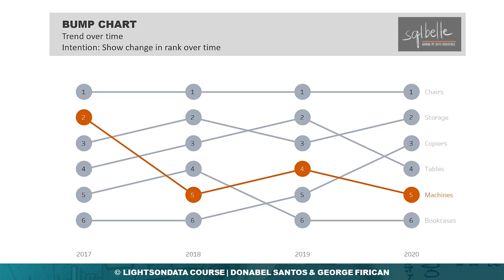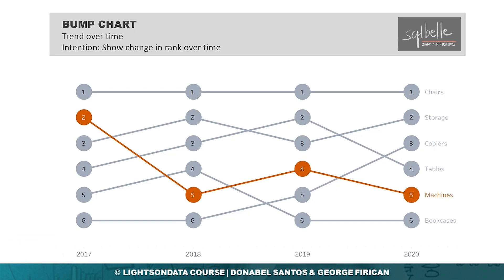A bump chart also shows trend over time, but what this chart shows easily is the change in ranking over time. Note that this chart does not highlight the magnitude of the difference between the ranks — we don't know if the difference is a dollar, ten dollars, a point, or a hundred points. If the magnitude of the changes is important, the bump chart may not be the appropriate chart to use, or we could use it as a complementary chart alongside another that shows both perspectives.